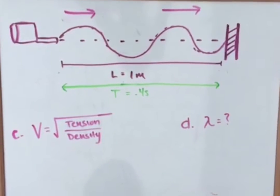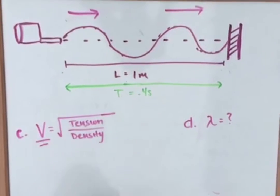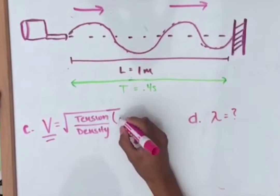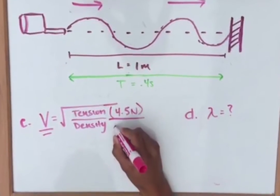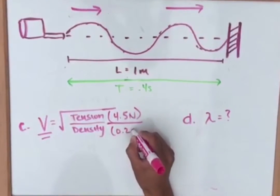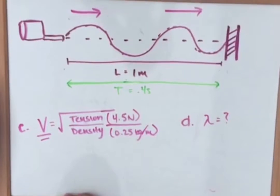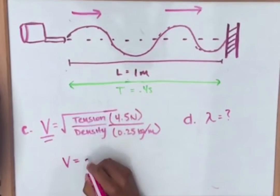So for part C, we need to find the speed of the string. And there is an equation, which is velocity equals the square root of tension divided by density. The tension is 4.5 Newtons. And the density is 0.25 kilograms per meter. The answer of the velocity comes out to be 4.2 meters per second.